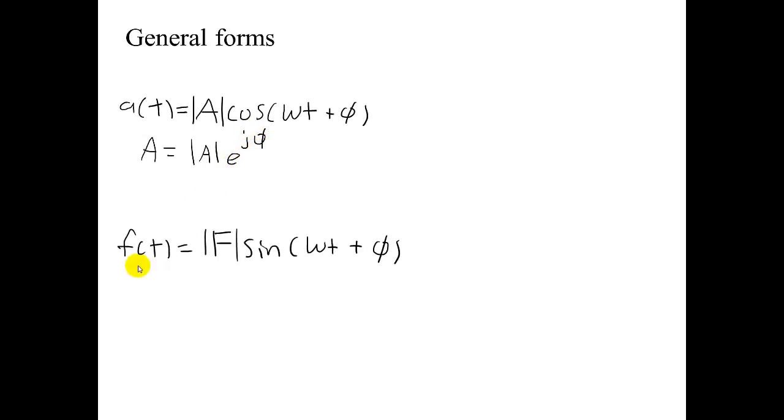If we have a signal of the form F(t) equals magnitude of F sine of omega t plus phi, this one is a little bit trickier. We need to make use of the identity that sine of omega t equals cosine of omega t minus pi over 2.